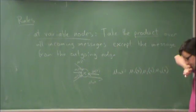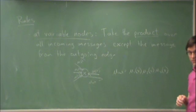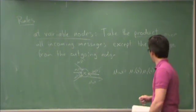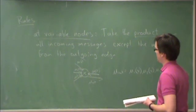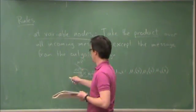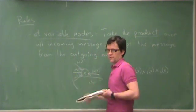At a variable node, the inbound and outbound messages are all functions of x. And this is to be interpreted as the probability of x given all of the information from this part of the graph.